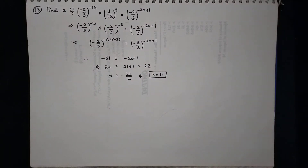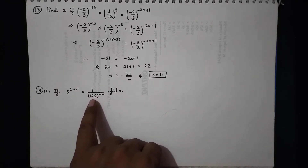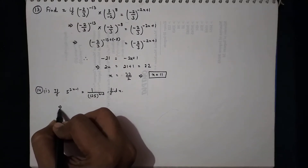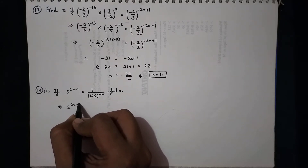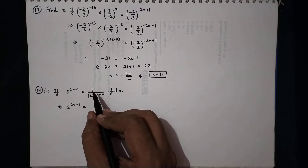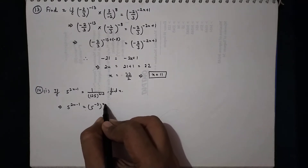Now let's see question 14. We have 5^(2x−1) = (1/125)^(x−3) and we need to find x. We move 125 from the denominator to the numerator, noting that 125 = 5^3, so 1/125 becomes 5^(−3). This gives 5^(2x−1) = (5^(−3))^(x−3).